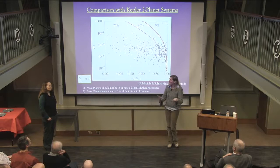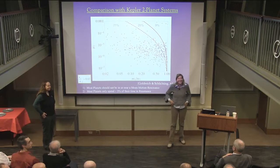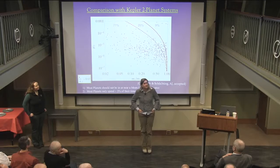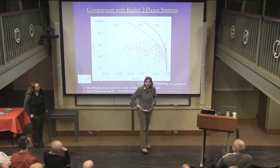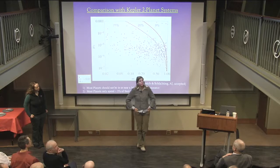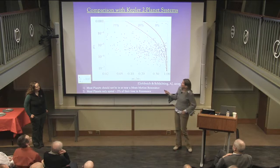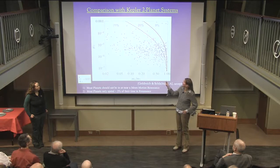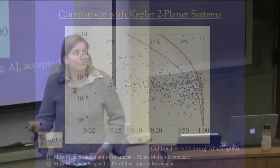Q: What did you assume to get masses for these Kepler planets, and how can that affect your results? A: I did something very simple — I took the radii from the Kepler catalog and assumed they have a density comparable to Neptune to get the masses. There is an uncertainty, so these numbers can change slightly. But it's a pretty big region in parameter space, so to really change the statistics you would have to change the masses by a lot. For most of them, we only know masses roughly.